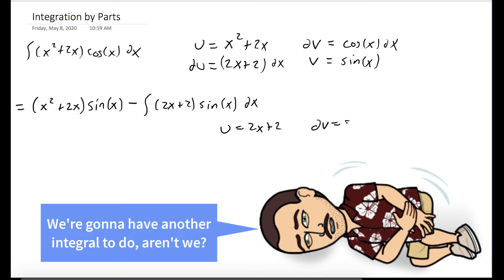So again, we'll pick u to be 2x plus 2, dv would be sine of x. The derivative of u is just 2, and the integral of dv is negative cosine of x.